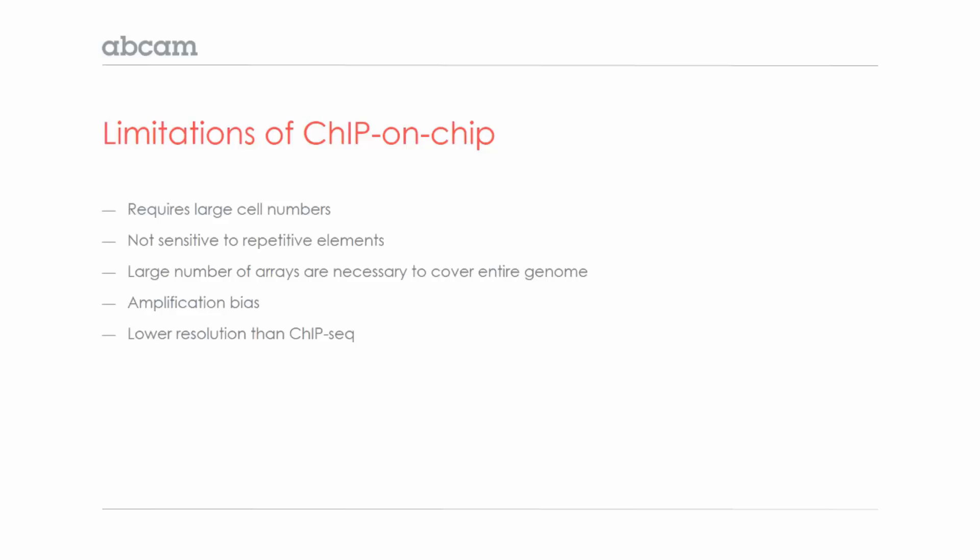A large number of arrays are necessary to cover the entire genome. And finally, chip-on-chip could be susceptible to amplification bias after the DNA amplification.